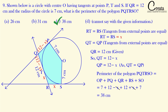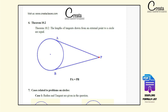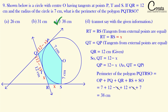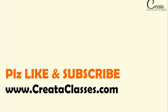The two concepts used in this question are: first, tangents from an external point to a circle are equal; second, perimeter is the length of the boundary. Based on these two concepts we solved this question. That's it for this lecture — thank you very much for being with Creata Classes. Check the description for various resource links. If the content is helpful, like, subscribe, and share. Thank you and best of luck.